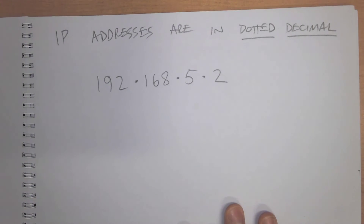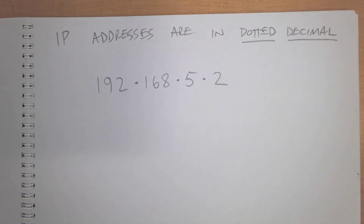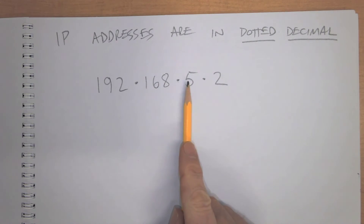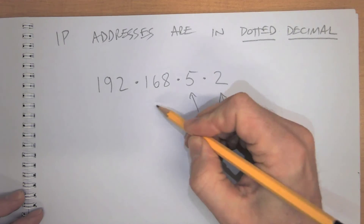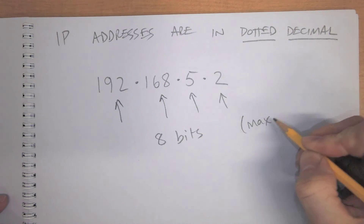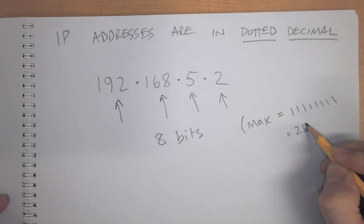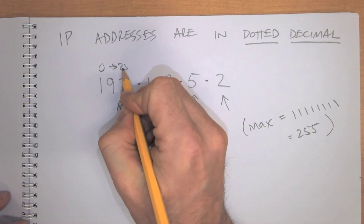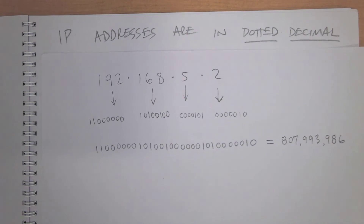It's also important to remember that IP addresses are not actually decimal numbers. They're a mashup of decimal and binary numbers called dotted decimal. You have four numbers separated by dots, and each of those is eight bits. That means the maximum value for each part is 255 — all eight bits set to 1. So each section can range from zero up to 255.